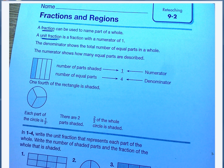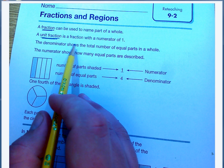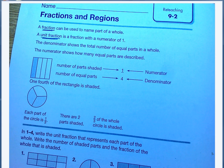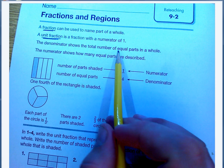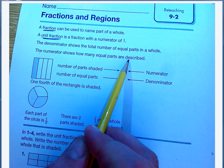Lesson two is fractions and regions, and this is where we're going to start developing that number concept a little bit more. Just a few quick vocabulary things before we start. A fraction can be used to name part of the whole. A unit fraction is a fraction with a numerator of one. The denominator is the total number of equal parts in a whole, and the numerator shows how many equal parts are described.